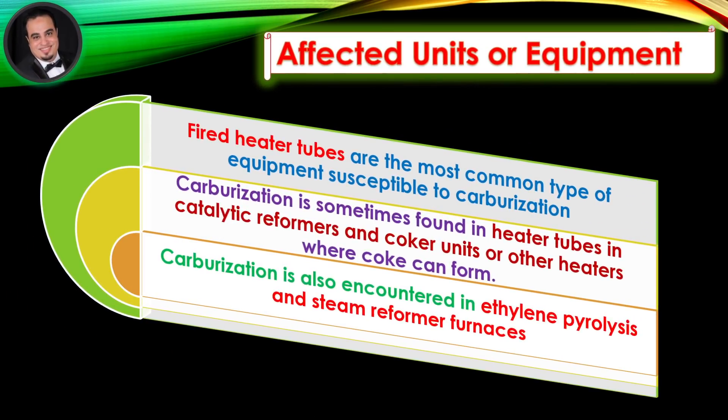Affected units or equipment: Fired heater tubes are the most common type of equipment susceptible to carburization. It is sometimes found in heater tubes in catalytic reformers and coker units or other heaters where coke can form. Carburization is also encountered in ethylene pyrolysis and steam reformer furnaces.